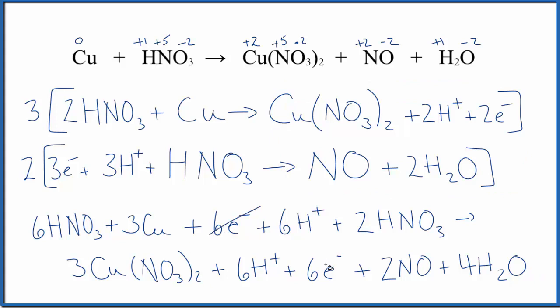So now we can simplify. I have six electrons in the reactants and products, six hydrogen ions on both sides. And then I can combine the two HNO₃ with the six HNO₃. That'll give me eight.